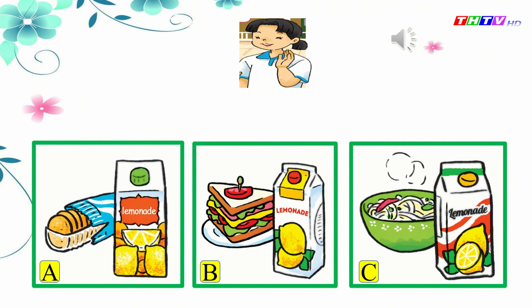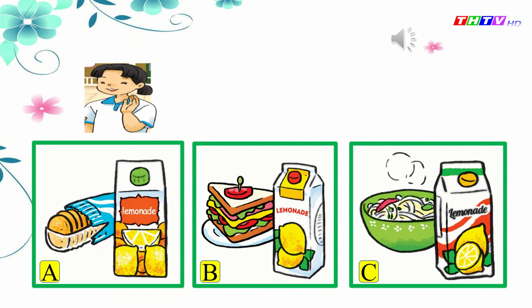Next one. This is Mai. What would she like to eat and drink? What would you like to eat? I'd like a packet of biscuits, please. What about a drink? I'd like a carton of lemonade, please. Again: I'd like a packet of biscuits, please. I'd like a carton of lemonade, please. Which one is correct — A, B, or C? Yes, A. A packet of biscuits and a carton of lemonade.